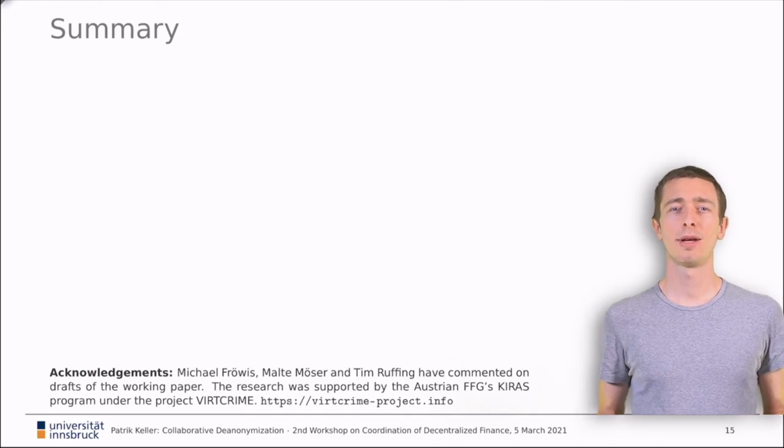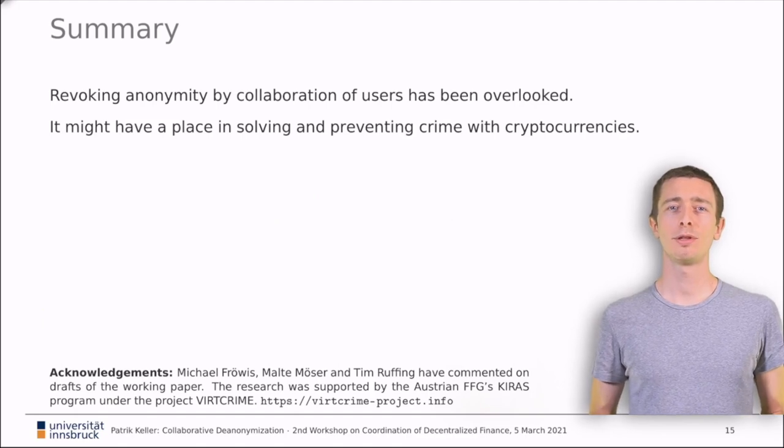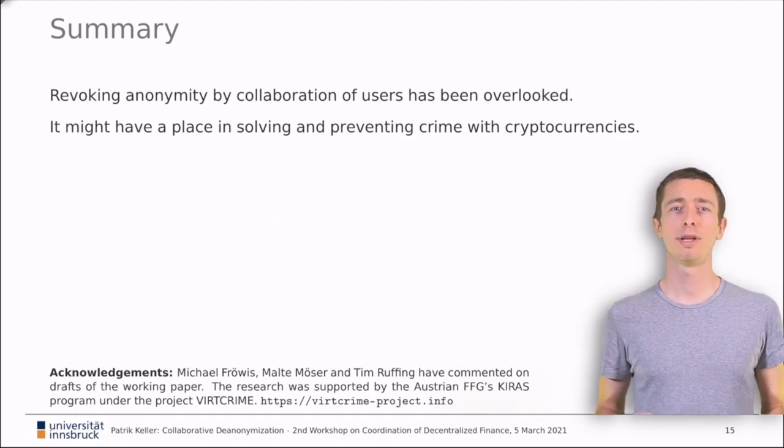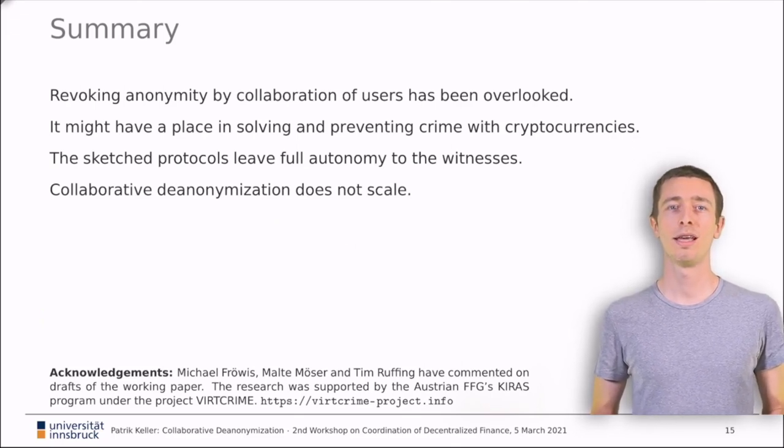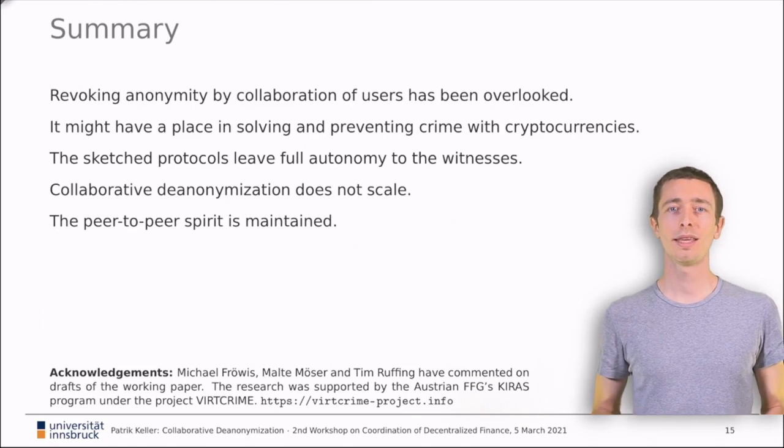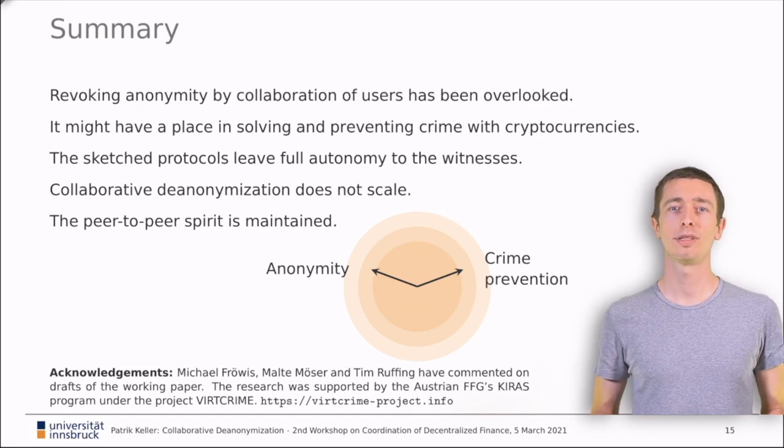Alright, let's sum up. We think that revocation of anonymity by collaboration of users has been overlooked so far. We think that collaborative de-anonymization can help law enforcement and might be leveraged to prevent crime. We have protocols sketched that leave full autonomy to witnesses about whether they collaborate or not. Thus, unlike conventional traffic analysis on blockchains, collaborative de-anonymization does not scale to mass surveillance. We think that our proposal is compatible with the peer-to-peer spirit that drives the cryptocurrency space, and we conclude that collaborative de-anonymization softens the tension between anonymity and law enforcement in distributed systems.